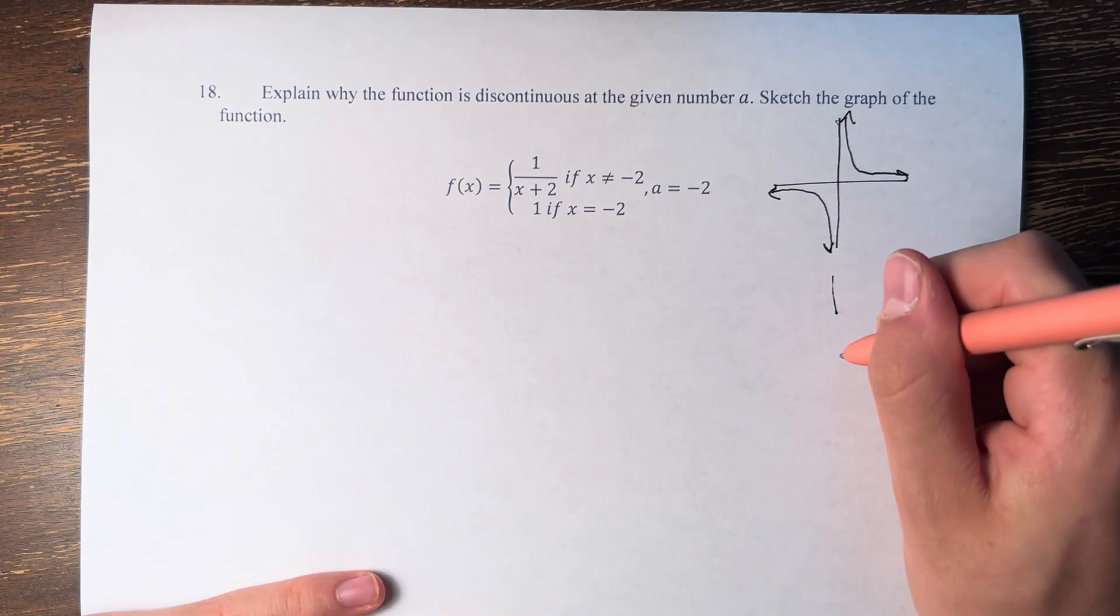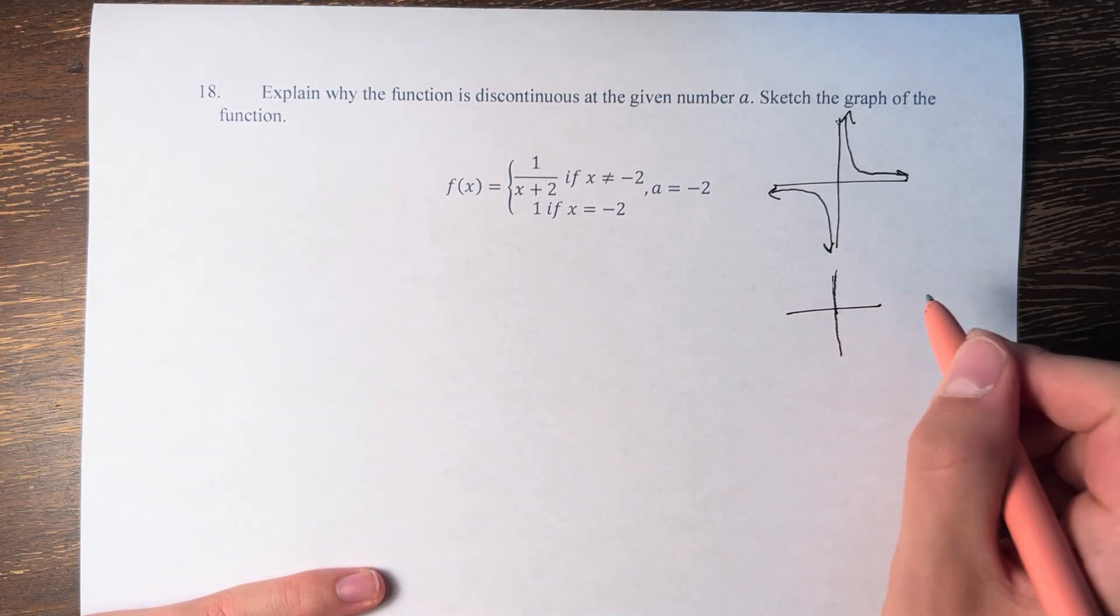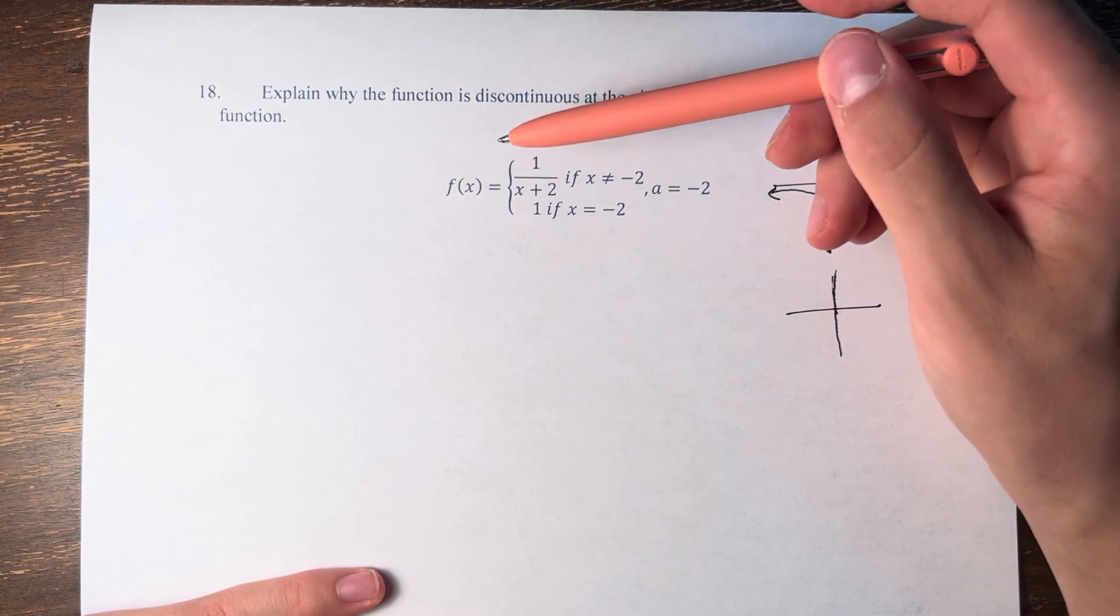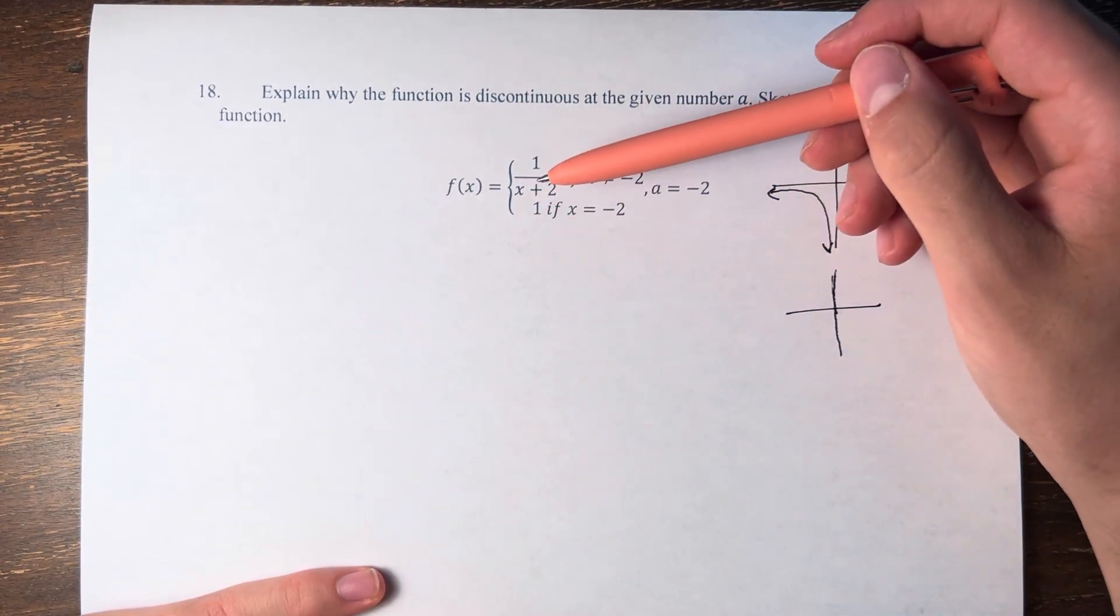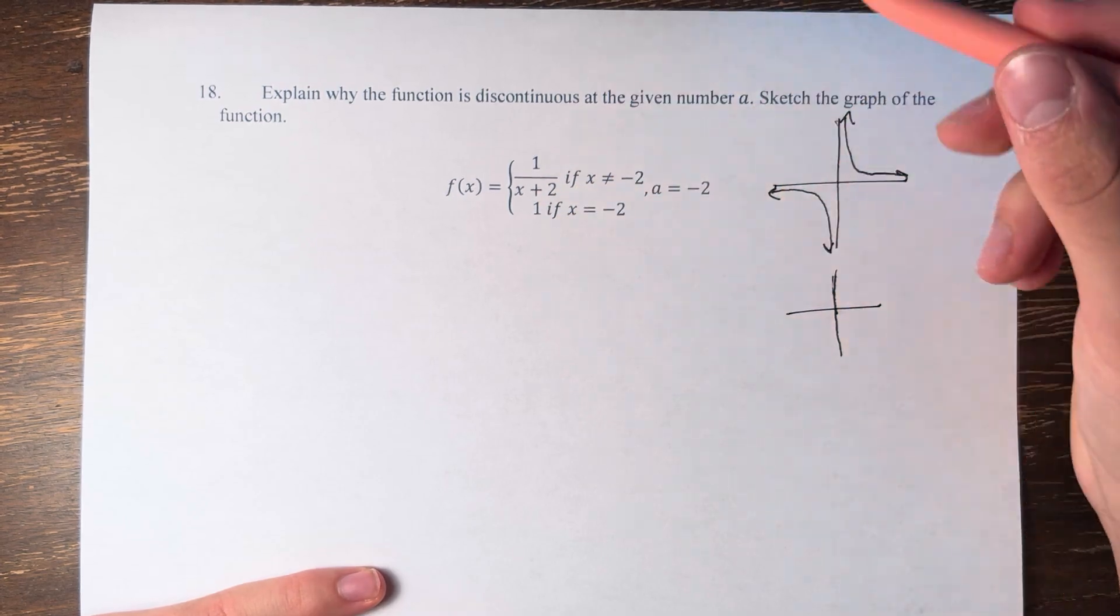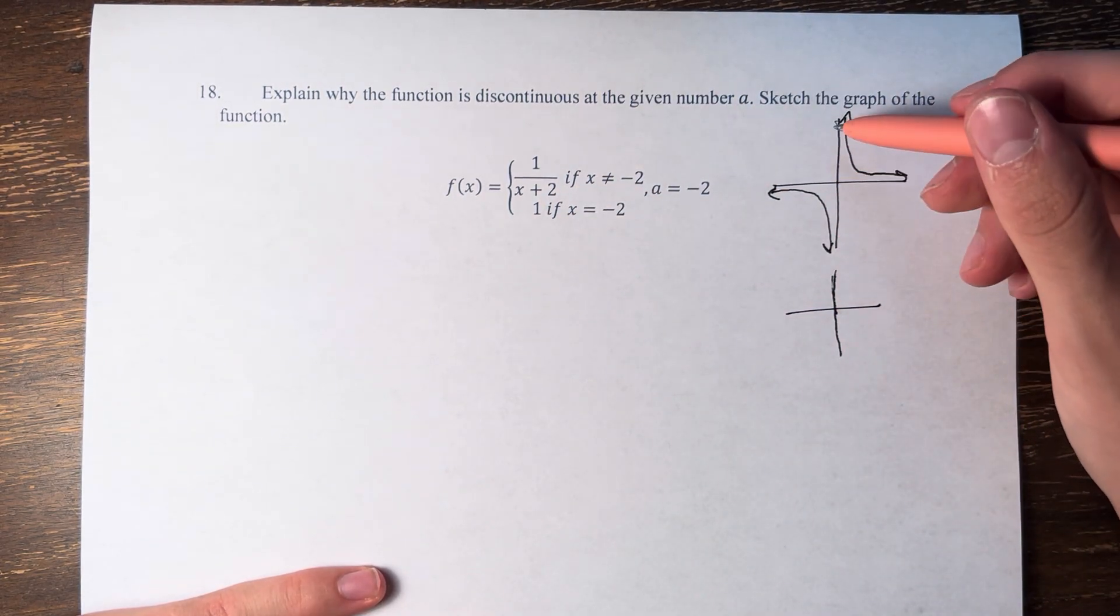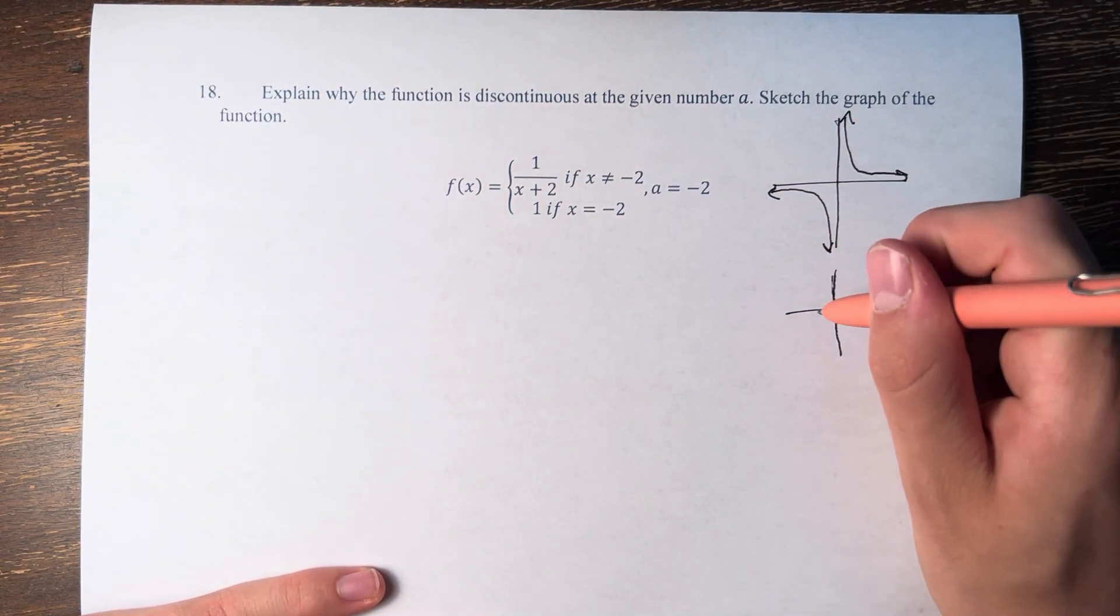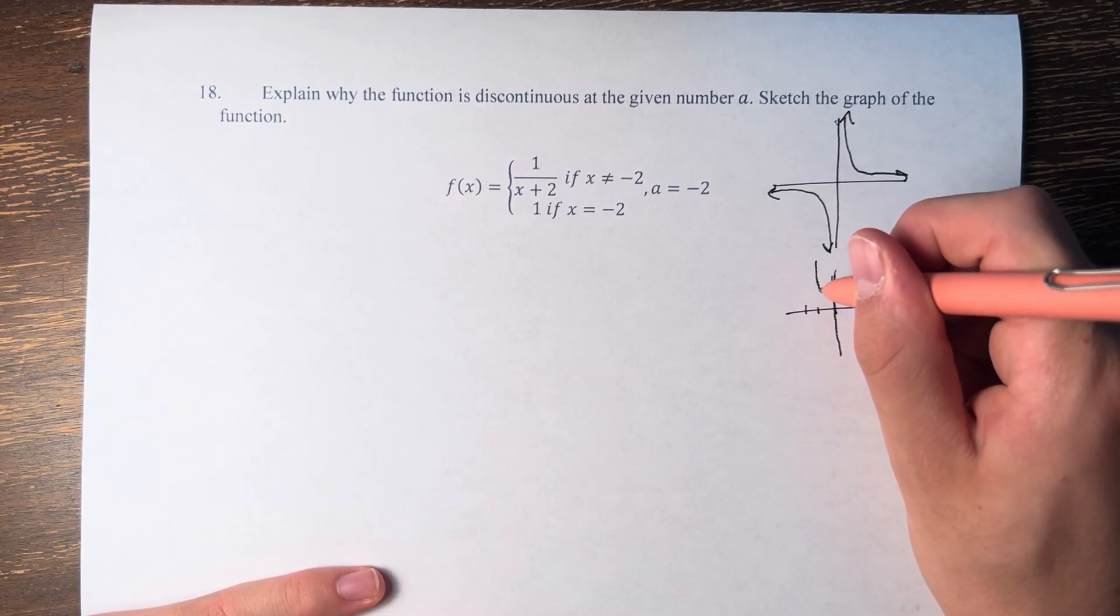And what we're doing by adding 2, that's a transformation. We're adding, so it's a shift. It's within the function, not outside of it, so it's to the left or the right. It's positive, so it's to the left, so we're moving to the left two units. So instead of approaching infinity and negative infinity as we get closer to 0, instead we're doing that as we get close to negative 2.